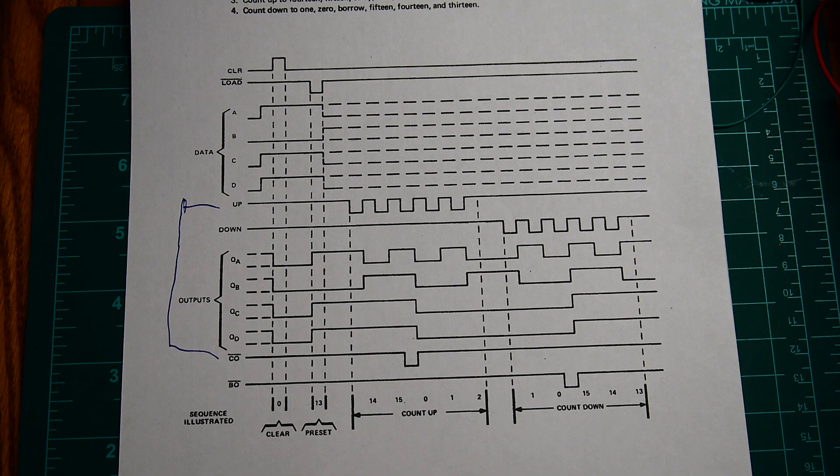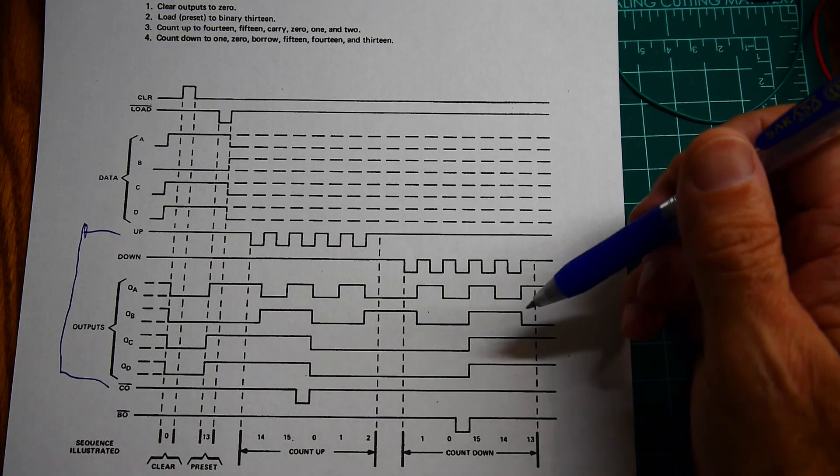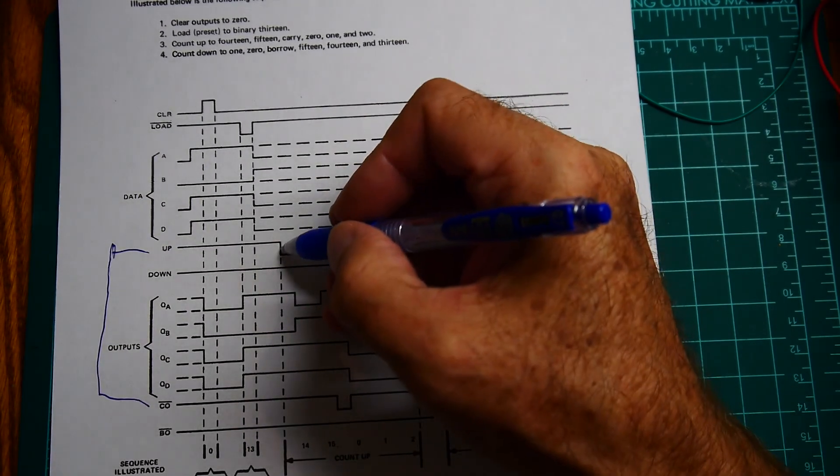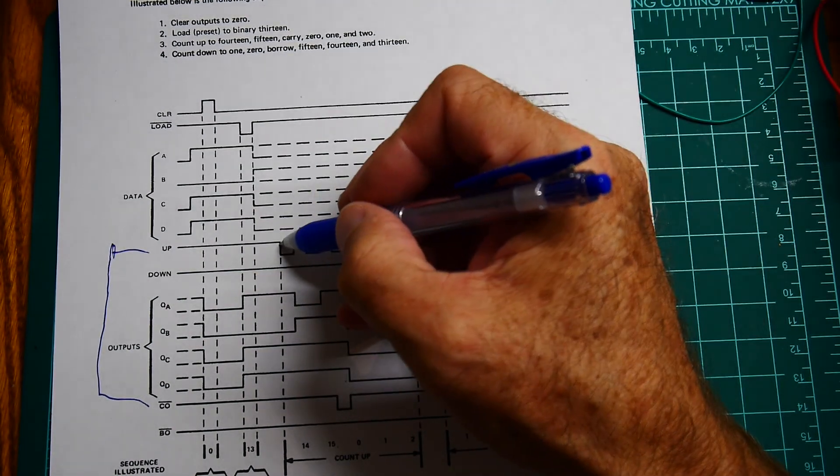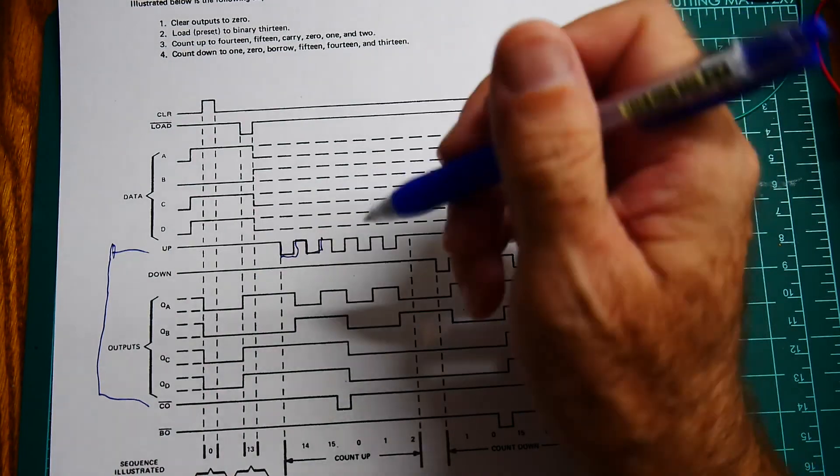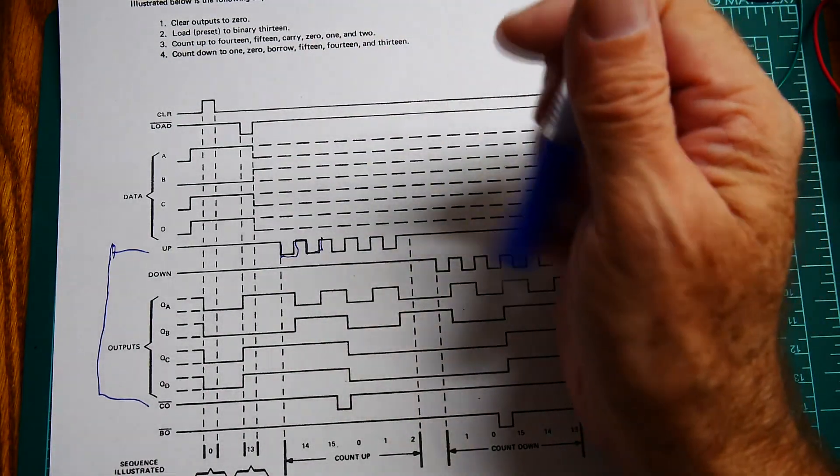And there we go. So I think this is going to be really easy to design and I think it's going to work great and if we're lucky, these up pulses, which are shown as negative going, may work without that weird double pulse problem I was having on the 163 chip.